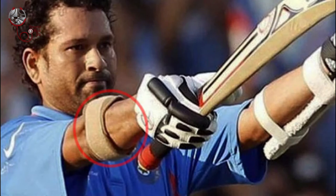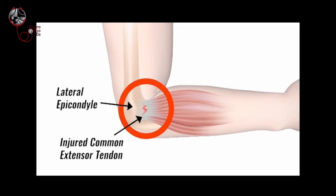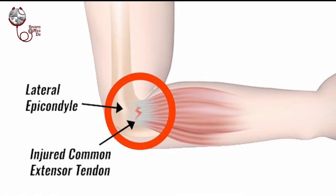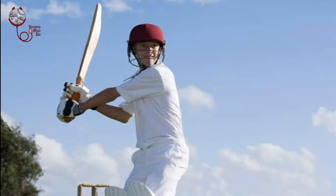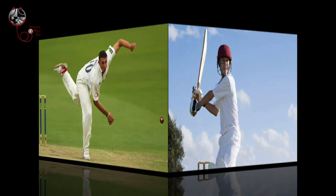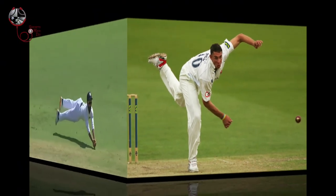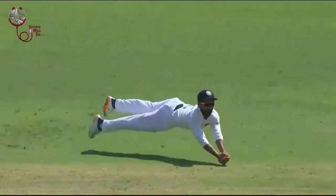Number four: tennis elbow. Did you know that Sachin Tendulkar, the god of cricket, almost quit cricket due to tennis elbow? Tennis elbow is a very irritating injury — once it occurs it keeps persisting, and unless you do the right form of treatment it won't resolve. The main cause is usually overuse, or a wrong technique in batting, throwing, or bowling that aggravates the injury.